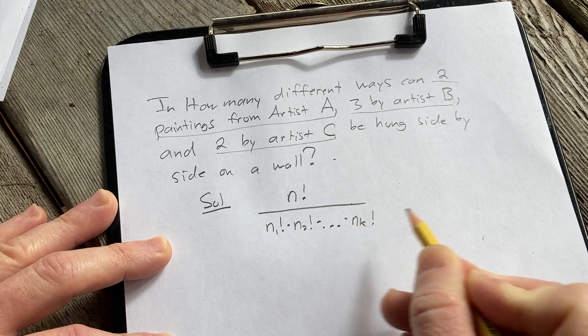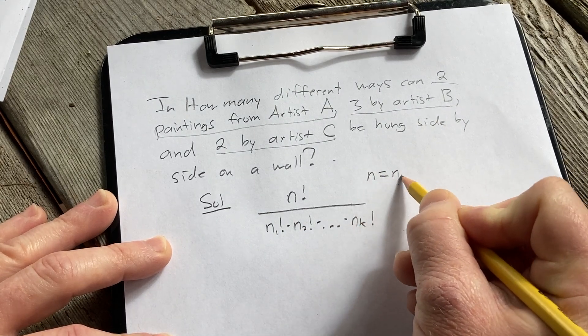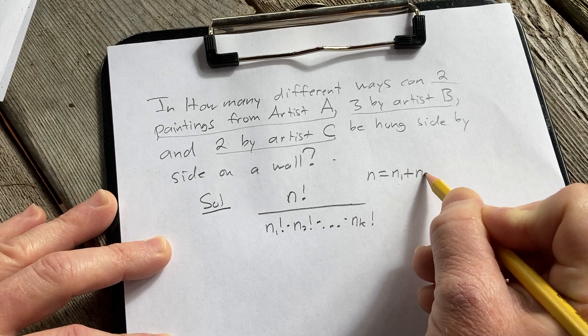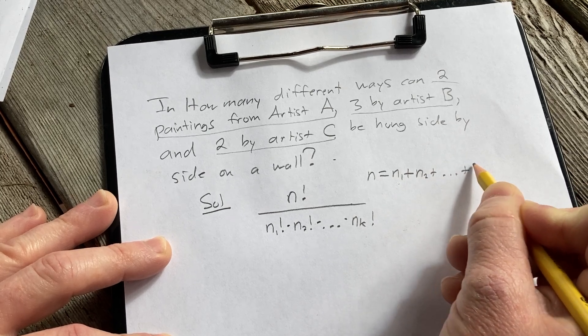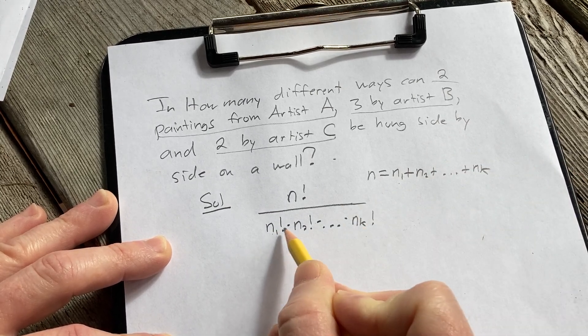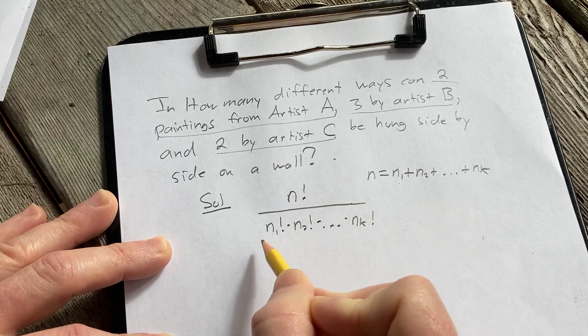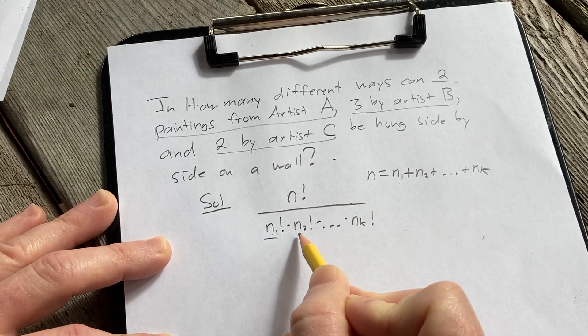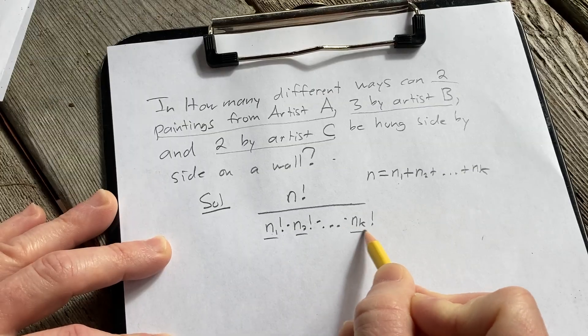And in this formula, n rather, is equal to the sum. So n1 plus n sub 2 plus n sub k. And all of these are different. These are the objects of the first kind, objects of the second kind, objects of the kth kind.